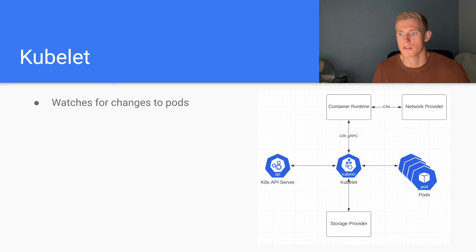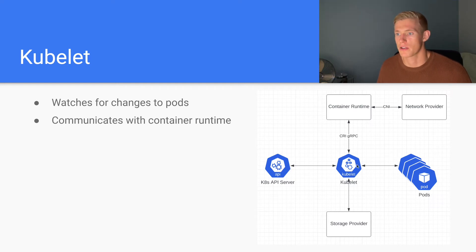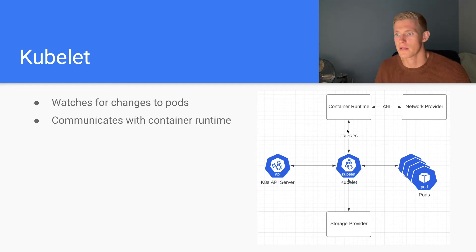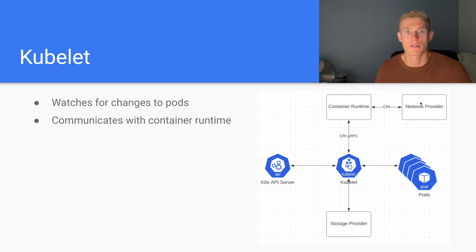Kubelet watches for changes to pods. It communicates with the container runtime — so when we say that we want a new pod in our cluster, the API server will send that information to kubelet. Kubelet will then communicate with the container runtime via what is called the container runtime interface, which is exposed via a protocol called GRPC. Once that communication has taken place, the container runtime goes away and is responsible for provisioning everything needed to deploy the pod, including setting up network resources and pulling the container image.